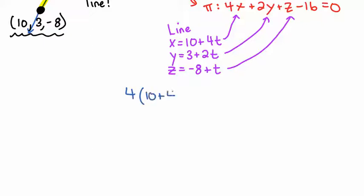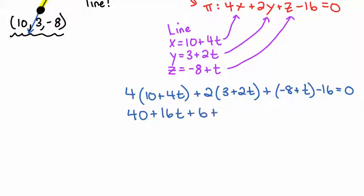So 4 times 10 plus 4t plus 2 times 3 plus 2t plus negative 8 plus t minus 16 equals 0. So I subbed in x, y, z. Now I'm just going to expand my brackets. So 40 plus 16t plus 6 plus 4t minus 8 plus t minus 16 equals 0. 21t equals, I feel like it was negative 22.